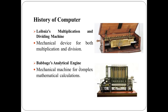The next one is Leibniz's multiplication and dividing machine. It was a mechanical device that could both multiply and divide. The German philosopher and mathematician Gottfried Leibniz built it around 1673.